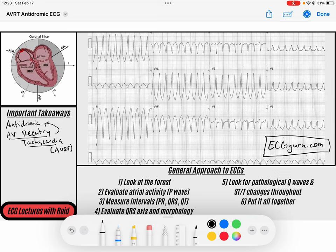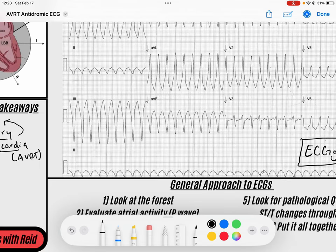So let's jump into this rhythm. When we're talking about antidromic AV reentry tachycardia, we're going to see that this is a subtype of a supraventricular tachycardia. As you look at this ECG here, you see we've got a very regular occurring QRS complex. It is incredibly fast.